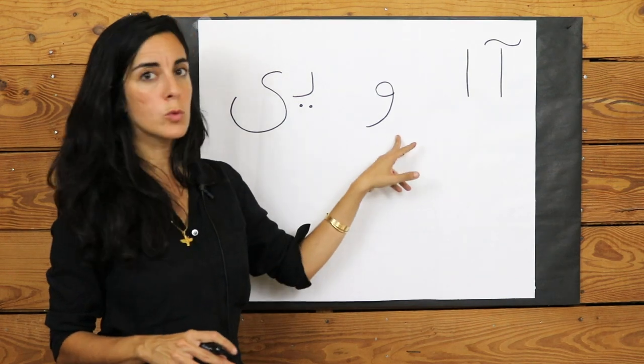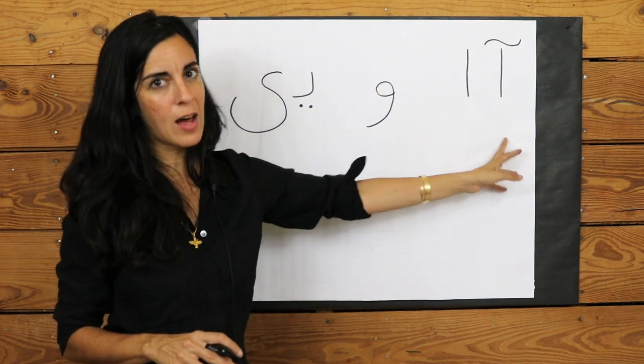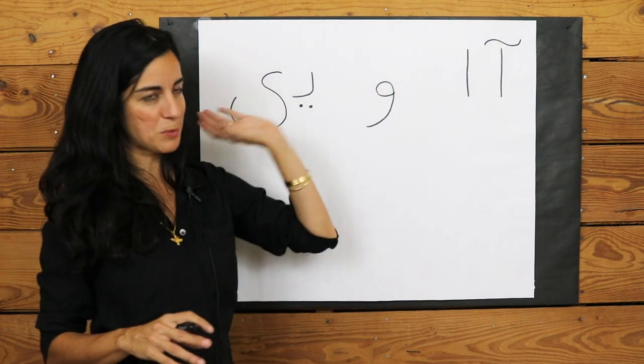So again, A, U, E. First letter of the alphabet, last letter of the alphabet, somewhere between.